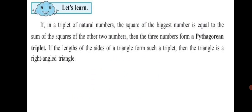If in a triplet of natural numbers, the square of the biggest number is equal to the sum of the squares of the other two numbers, then the three numbers form a Pythagorean triplet. If the lengths of the sides of a triangle form such a triplet, then the triangle is a right-angled triangle.